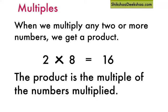Let's understand multiples. When we multiply any 2 or more numbers we get a product. This product is the multiple of the numbers multiplied. So 16 is the multiple of 2 and 16 is the multiple of 8 as well.